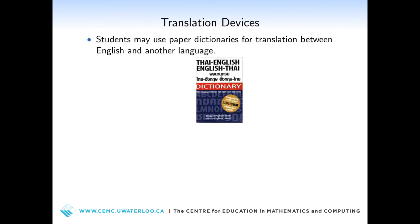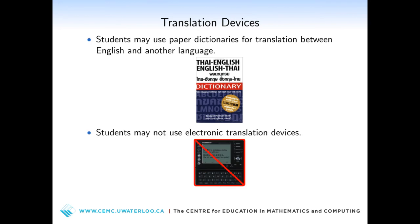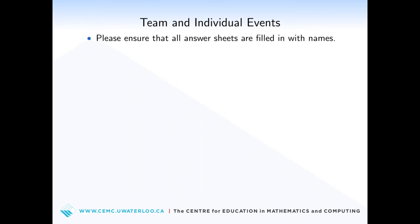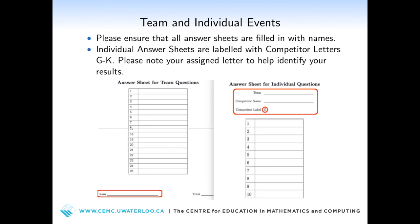Students may use paper dictionaries for translation between English and another language. Students may not use electronic translation devices. During the team and individual events, please ensure that all answer sheets are filled in with names. The individual answer sheets are labelled with competitor letters from G to K. Please note your assigned letter to help identify your results.